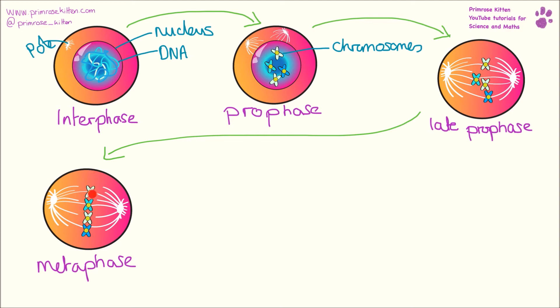As soon as all of the chromosomes are lined up in the middle and are attached to both sides, the stop signal will be turned off and that is how the cell knows it is ready to divide.